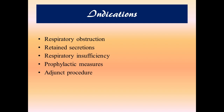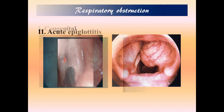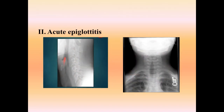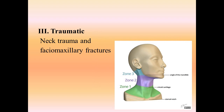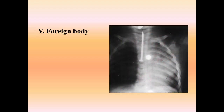For respiratory obstruction, congenital defects such as a vascular web or laryngeal web may indicate tracheostomy. Other examples include croup, epiglottitis, neck and facial or maxillary fractures — especially involving the cricoid cartilage — as well as neoplasia obstructing the upper airway, and foreign body aspiration causing upper airway obstruction.